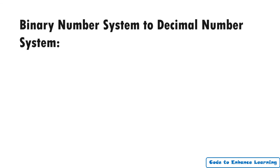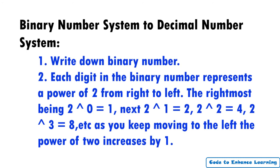Steps to convert binary number system into decimal number system. Step 1: Write down binary number. Step 2: Each digit in the binary number represents a power of 2 from right to left. The rightmost being 2 power 0, next 2 power 1, third 2 power 2 and so on. As you keep moving to the left, the power of 2 increases by 1. Step 3: Write the power of 2 above its corresponding binary bit from right to left.